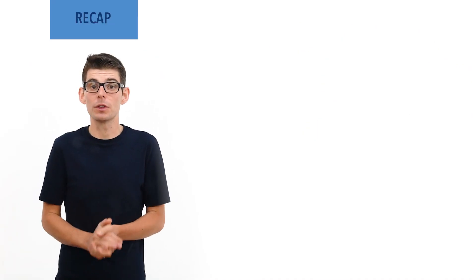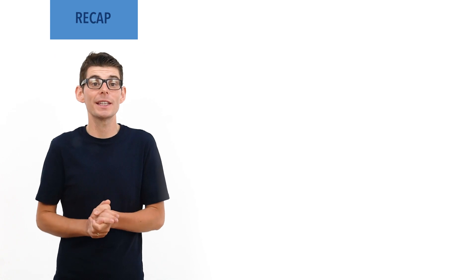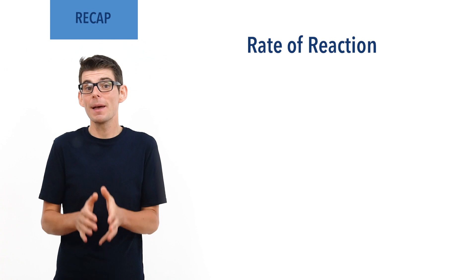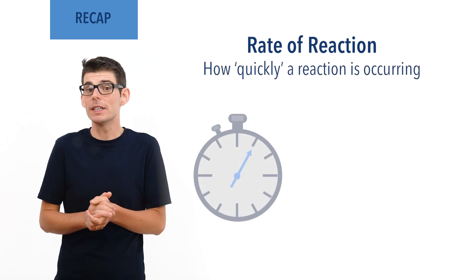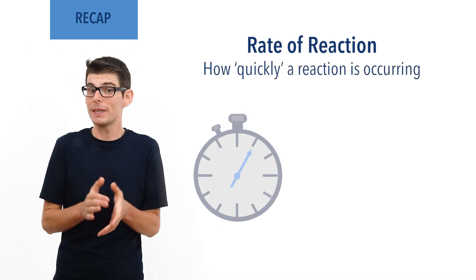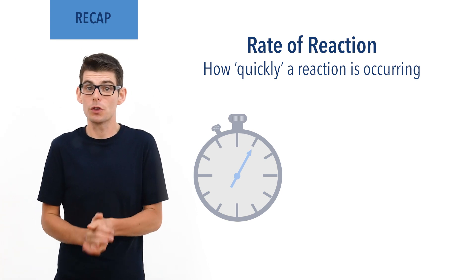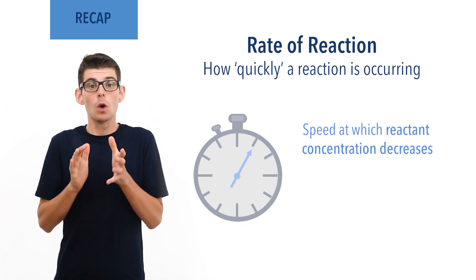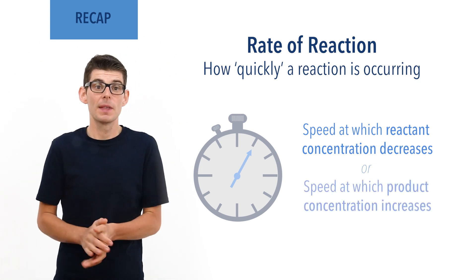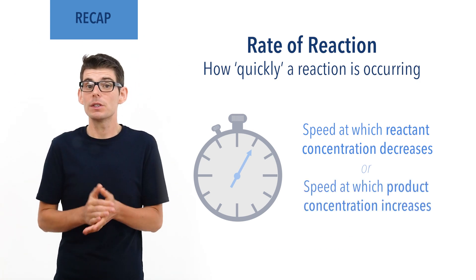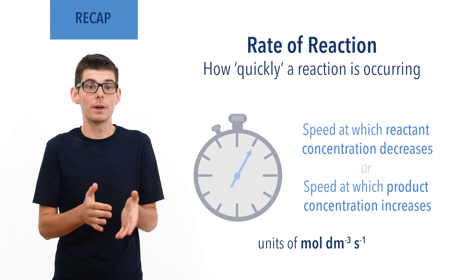Before we talk in detail about the Arrhenius equation, there are a few essential ideas you need to be comfortable with. Rates of reaction describe how quickly reactions are occurring. They can be measured in terms of the speed at which reactant concentration decreases, or the speed at which product concentration increases, giving the units mole per decimetre cubed per second.